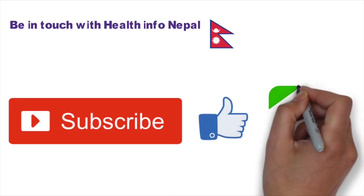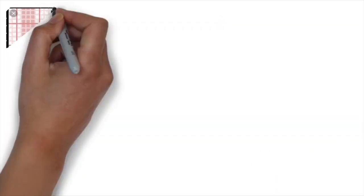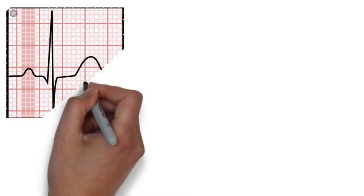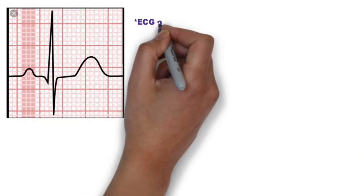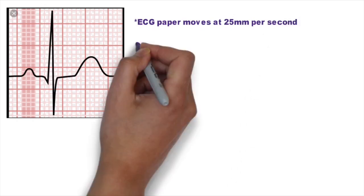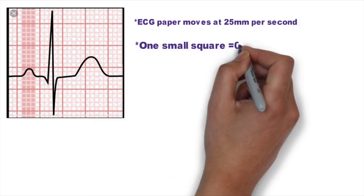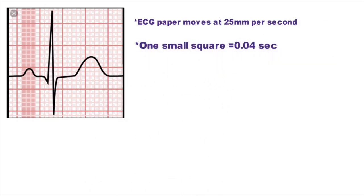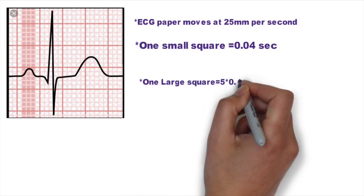Before understanding ECG, we should know the ECG paper moves at a speed of 25 mm per second. One small square is equal to 0.04 seconds and one large square is equal to 0.2 seconds.